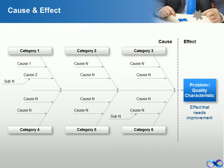The cause and effect diagram is also known as the fish bone diagram, or Ishikawa diagram, after the name of its inventor.